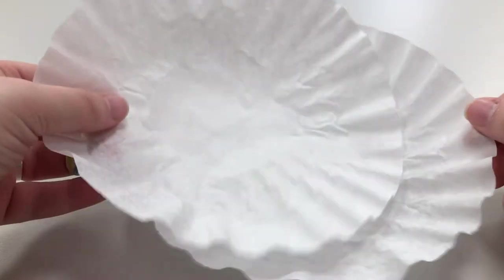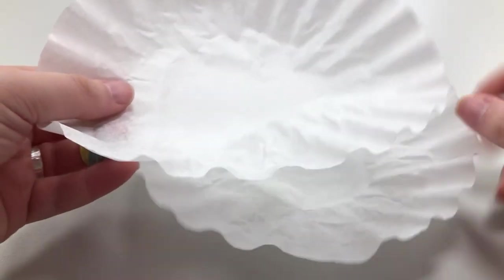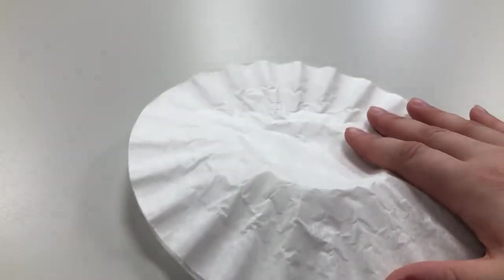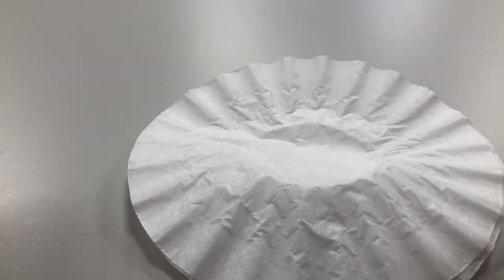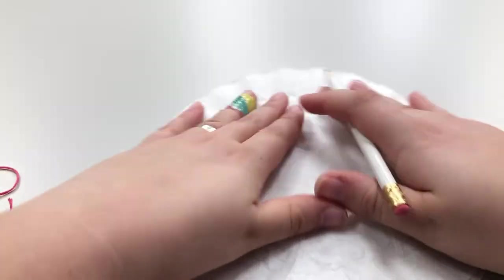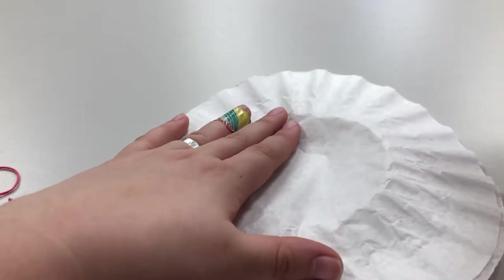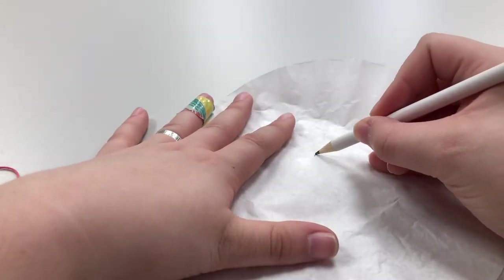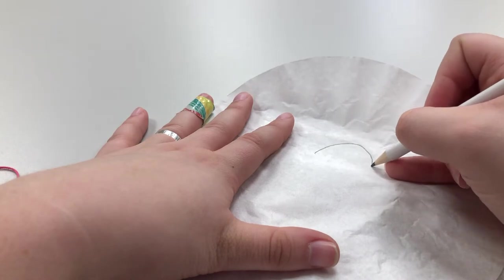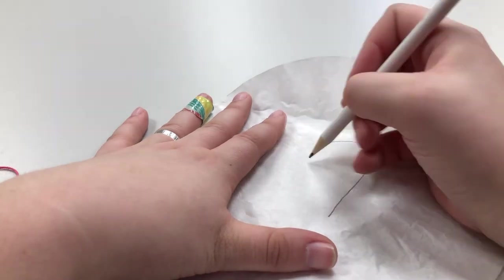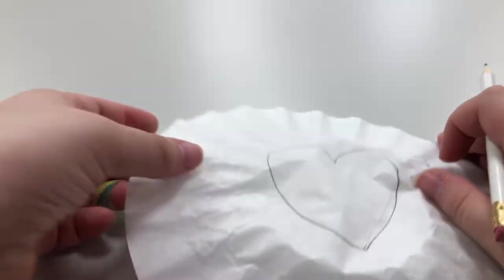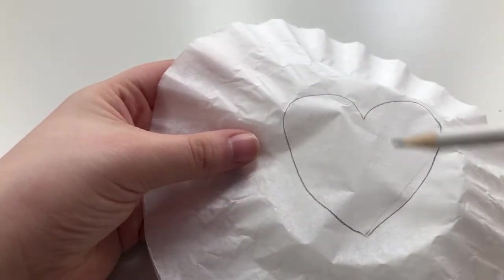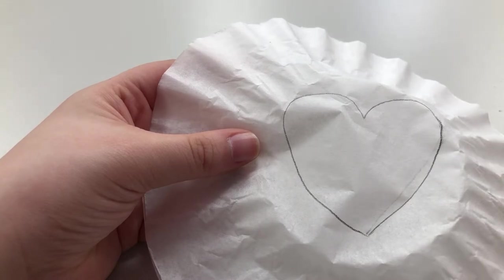First things first, you're going to take your two coffee filters and lay them on top of each other because we're going to draw our basic shape. Now you can trace a heart if you want or you can freehand draw one. I'm personally going to freehand draw one because I feel pretty comfortable with it. It's a pretty simple shape. You're going to want to make sure your heart has plenty of space because that's how much space you'll have to put tea in your tea bag.